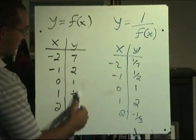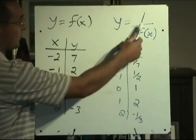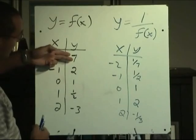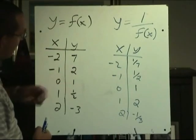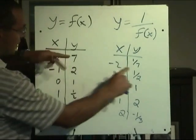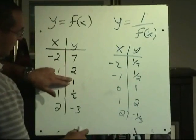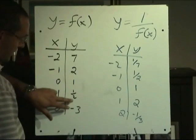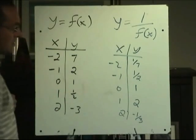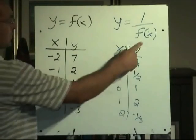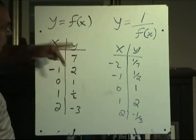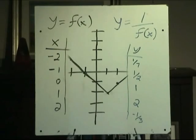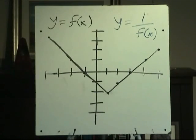For reciprocal functions, we take the y values of the existing graph and divide 1 by those values. Another way of looking at it: just take the reciprocal of the y values — that's why it's called a reciprocal function. So instead of 7 it's 1/7, 2 becomes 1/2, the reciprocal of 1 is still 1, the reciprocal of a half is 2, and the reciprocal of negative 3 is negative 1/3. All y values get flipped around.